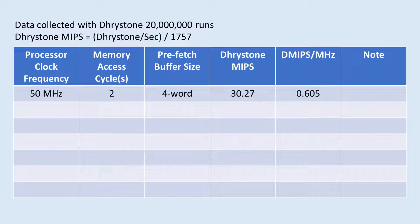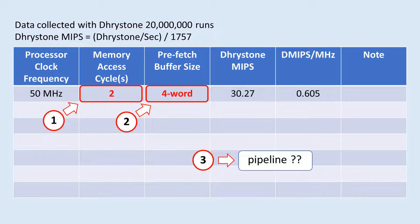The overall DMIPS number is pretty low. I will not try to improve it instantly but would investigate what could be improved. There are three areas I can quickly think of to improve the Dhrystone number: first is the memory access cycle, second is to improve the prefetch buffer, and third would be to add pipelines. For the first two I will do some quick evaluations here, but for the third item on pipelining I will not elaborate much at this time.